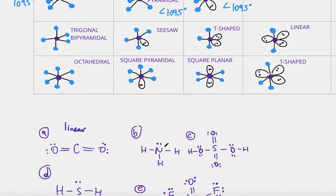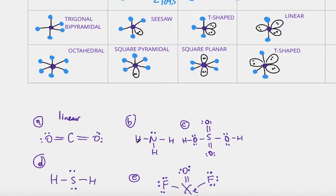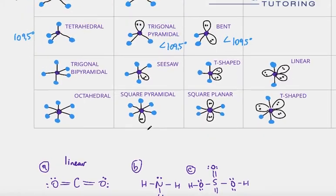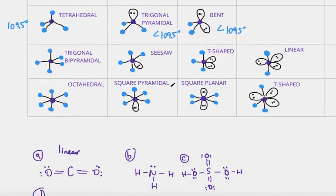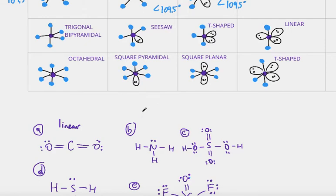Part B, my central atom is nitrogen. Nitrogen is connected to three other atoms and it has one lone pair. Let's go ahead and find that on the chart. We search and we see: central atom connected to three other atoms, one lone pair — trigonal pyramidal. So we will say trigonal pyramidal for this one.